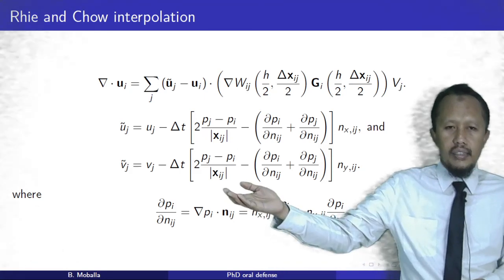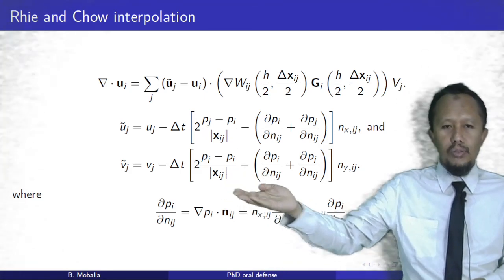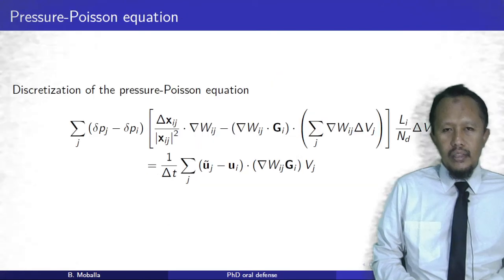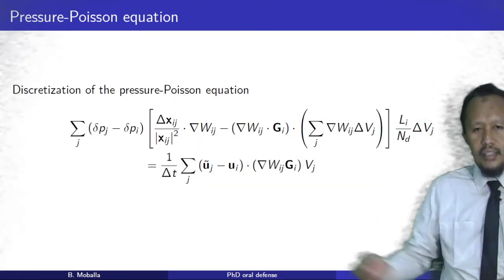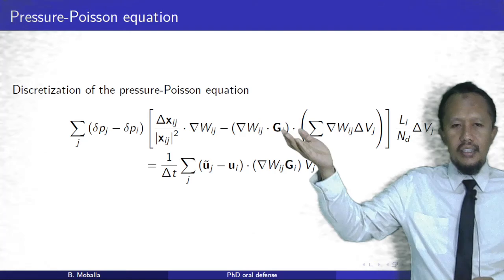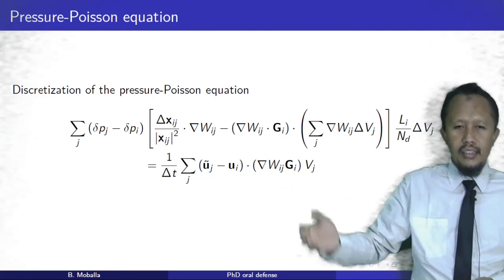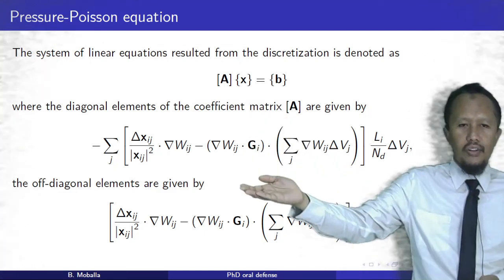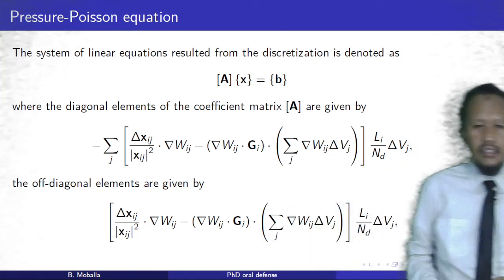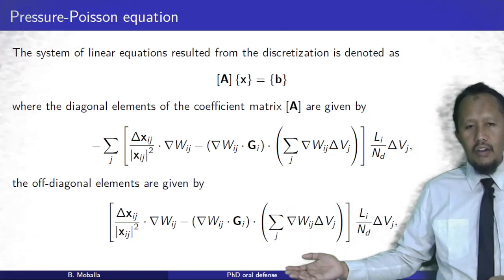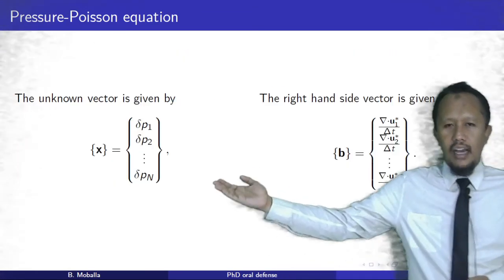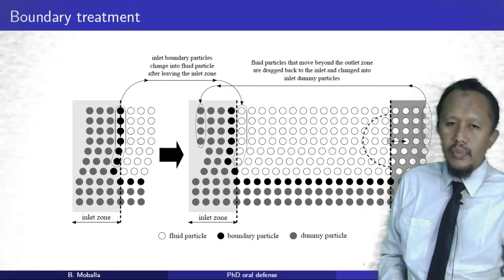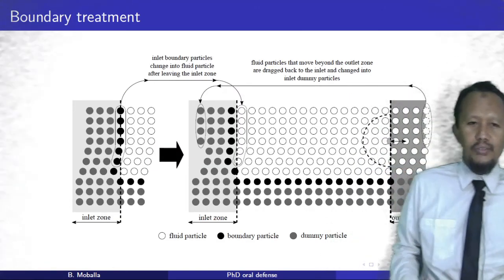We employ this in the pressure Poisson equation to obtain a system of linear equations. The diagonal and off-diagonal elements of the coefficient matrix are identified, along with the unknown vector (pressure correction) and the right-hand side vector. We solve this system using a biconjugate gradient stabilized method.